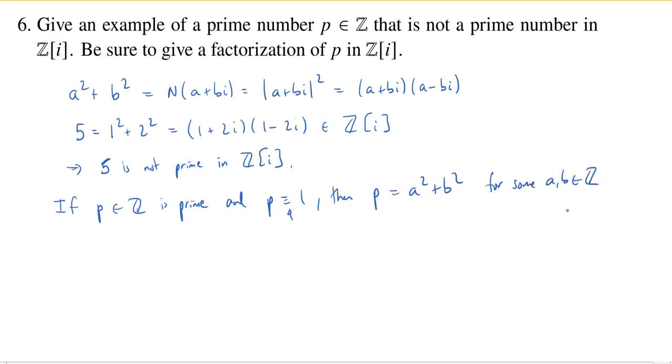Which tells you that p is not prime in the Gaussian integers.